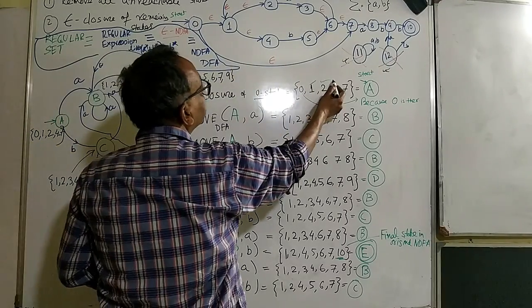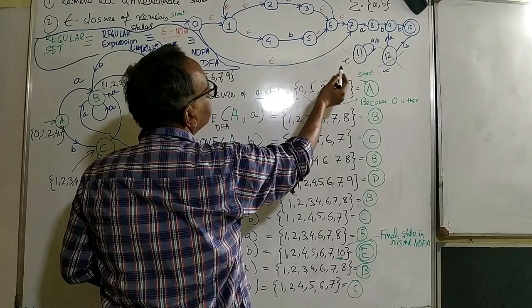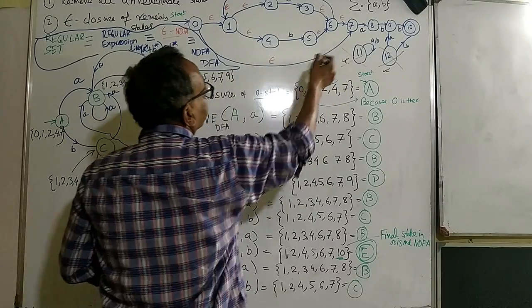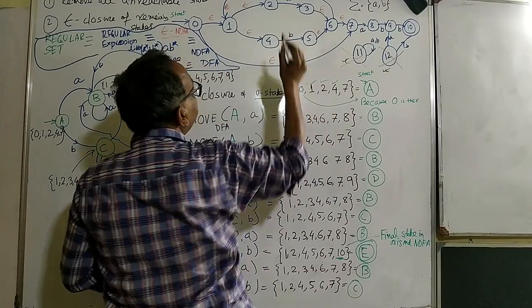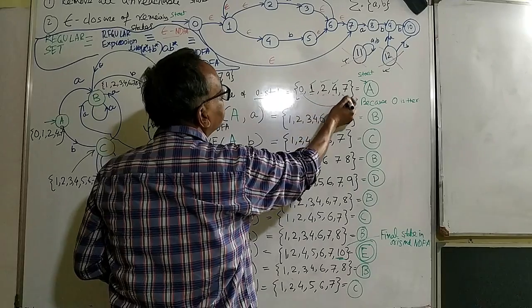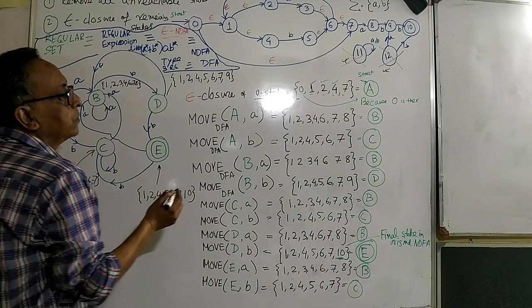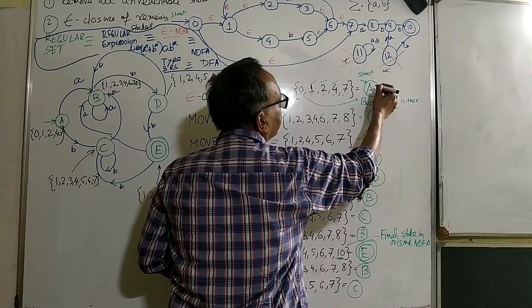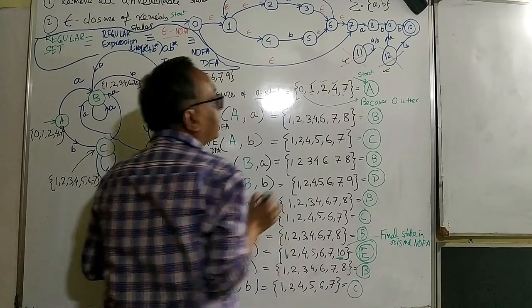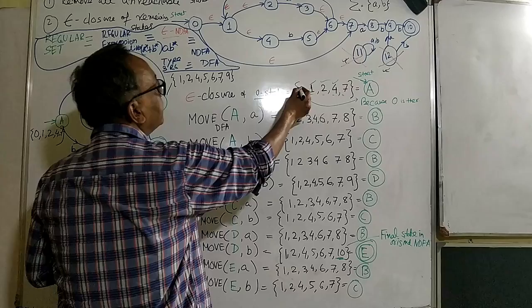And because one, four is there. And because how the seven is come? Because from one to seven. So you cannot reach any other state other than zero, one, two, four, seven through epsilon closure. So we give a new state A and we can make it a start state. Why I make it a start state? Because zero is there.